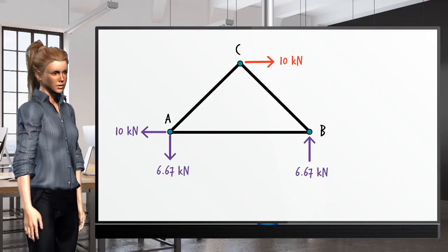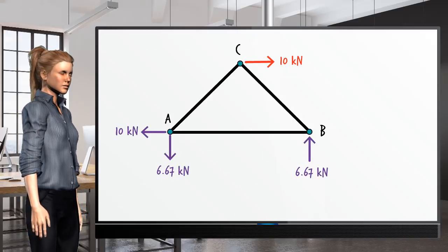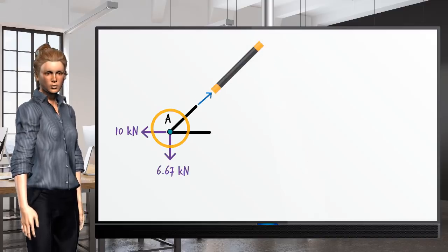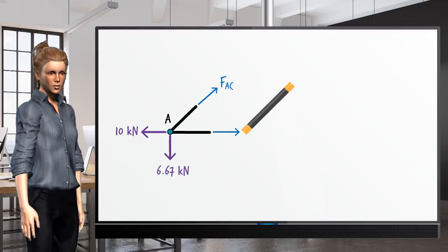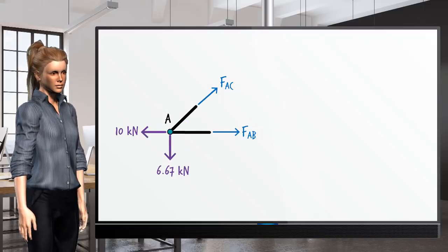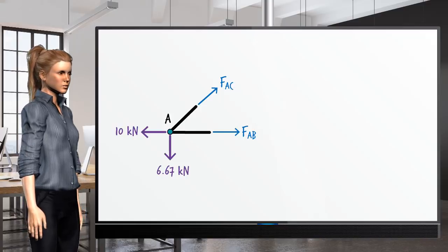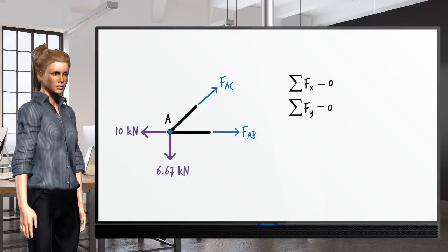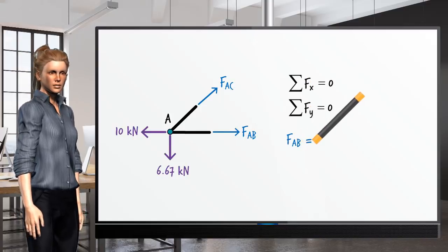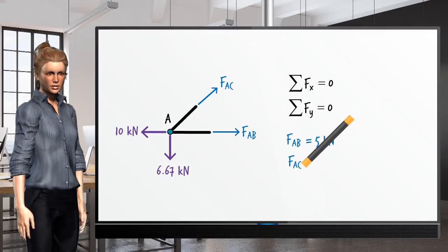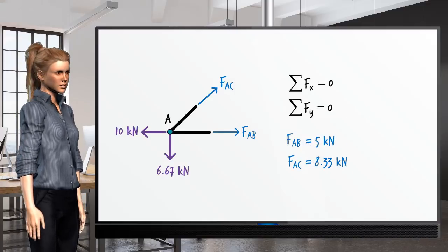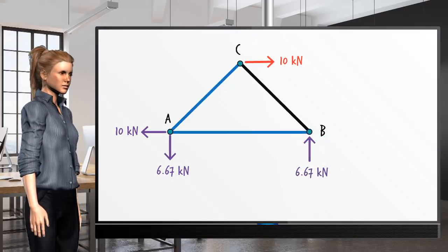Step 2: Locate a joint with at most 2 unknown member forces. Draw its free body diagram. Write the two joint equilibrium equations and solve them for the unknown forces. Then, label the members with the calculated forces.